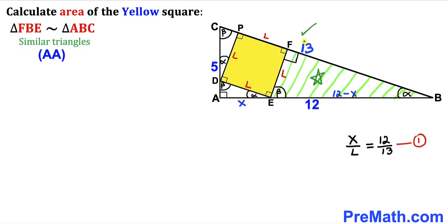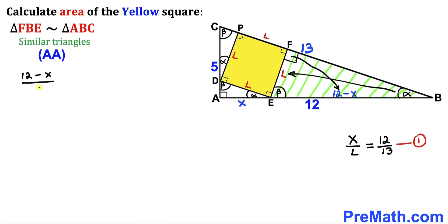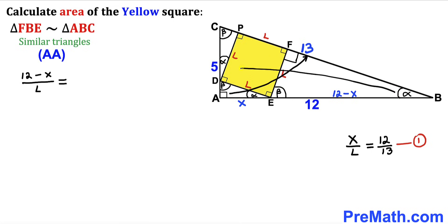Here's our next step: let's focus on right triangle FBE and big right triangle ABC. These two right triangles FBE and ABC are similar triangles according to the angle-angle similarity theorem. So we write a proportion. In triangle FBE the side opposite to 90 degrees is 12 minus x and the side opposite to angle alpha is l, so we write (12 − x)/l. In triangle ABC, the side opposite to 90 degrees is 13 and the side opposite to angle alpha is 5, so we write 13/5.